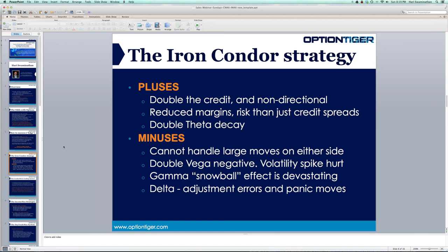You might have two or three successful iron condor trades, but the one time it goes against you, you'll give it back. This shouldn't be surprising because we know the market maker has an edge — if we win three or four times, statistically one out of those four times we give it back. You've probably heard that in the options market, 80 to 90 percent of traders are losers, and those numbers are pretty accurate because of all these different factors.